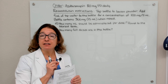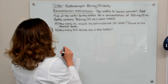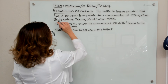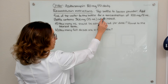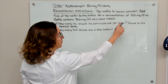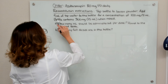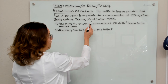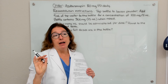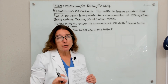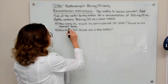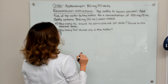Let's work through this reconstitution problem on the board. We have an order for azithromycin 80 milligrams PO daily. Reconstitution instructions state to tap the bottle to loosen the powder, add 9 milliliters of tap water to the bottle for a concentration of 100 milligrams in 5 mL of solution. The bottle contains 300 milligrams or 15 mL when mixed. The question being asked is: how many milliliters should be administered per dose, rounded to the nearest tenth?